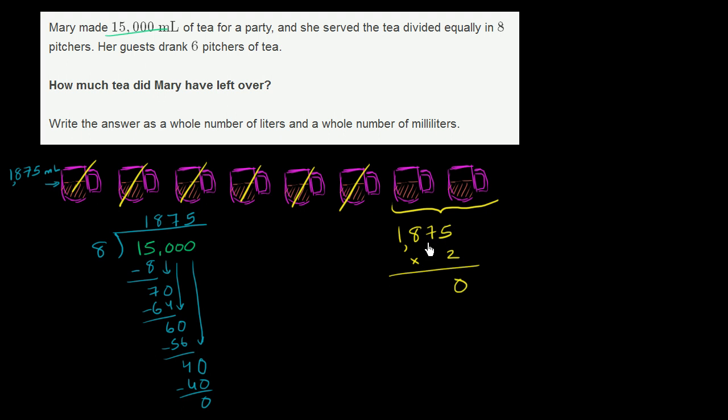Two times five is 10. Two times seven is 14, plus one is 15. Two times eight is 16, plus one is 17. Two times one is two, plus one is three. So what she's left over with is 3,750 milliliters.